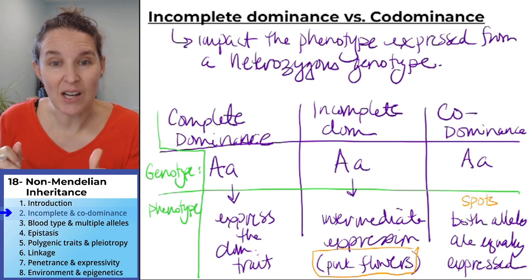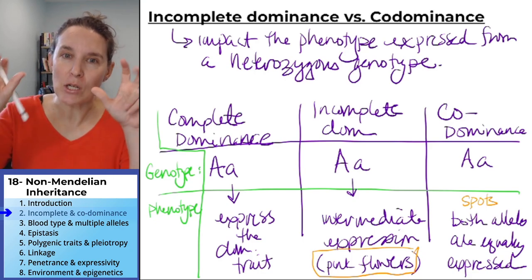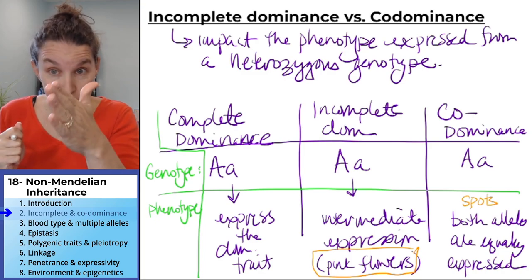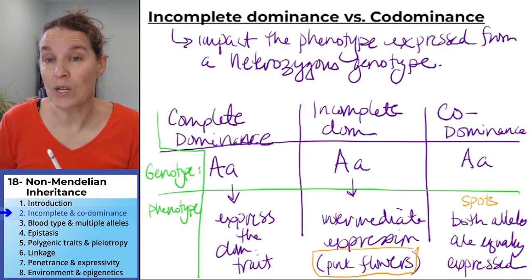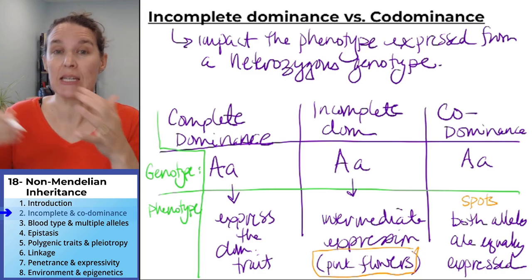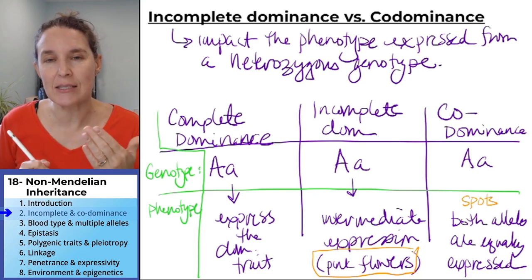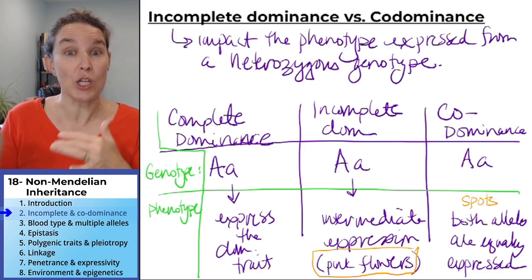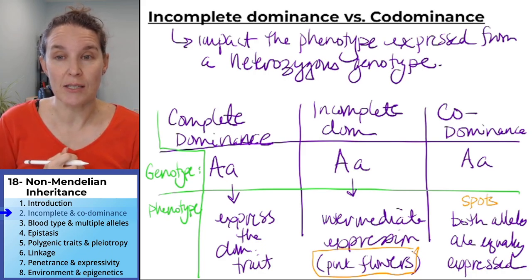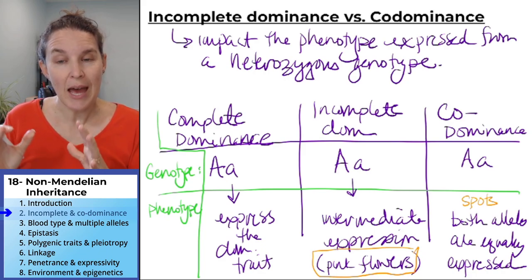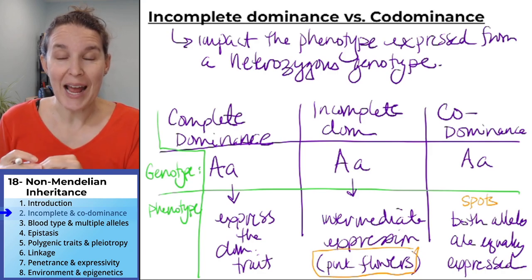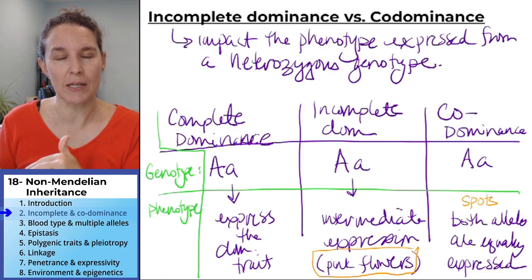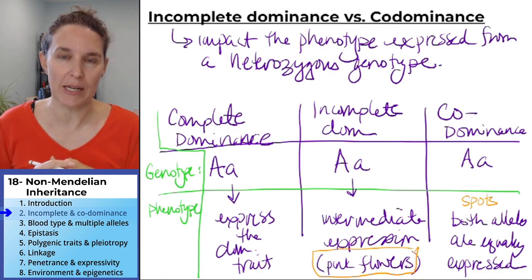The next thing we're going to talk about is multiple alleles, and we'll have another example of codominance in that section — probably the best example we have. I probably won't ask you to distinguish between incomplete dominance and codominance unless it's in the blood type example we're doing next.